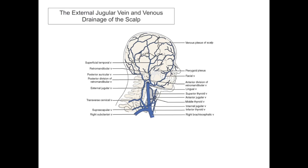This image initially does look quite busy, but I want to draw your attention to some of the features. Many of the veins of the scalp and face essentially follow similar routes to the arterial supply of these structures and often share very similar names.